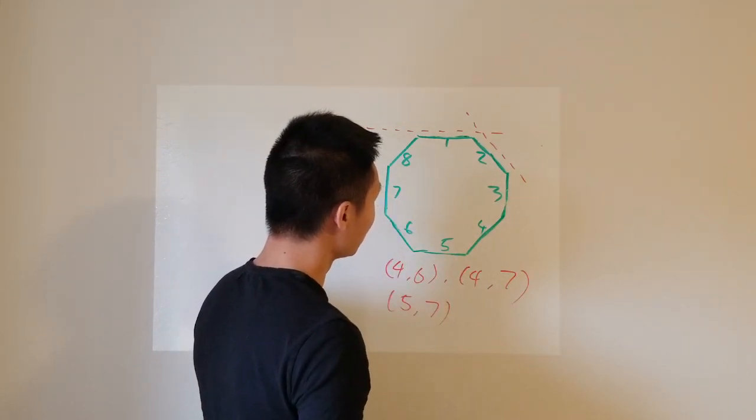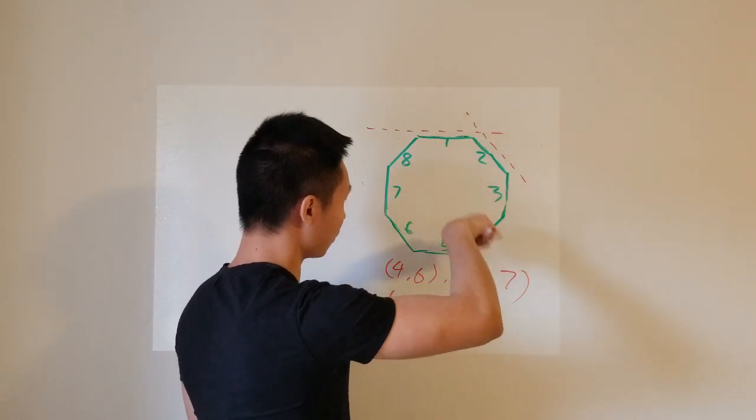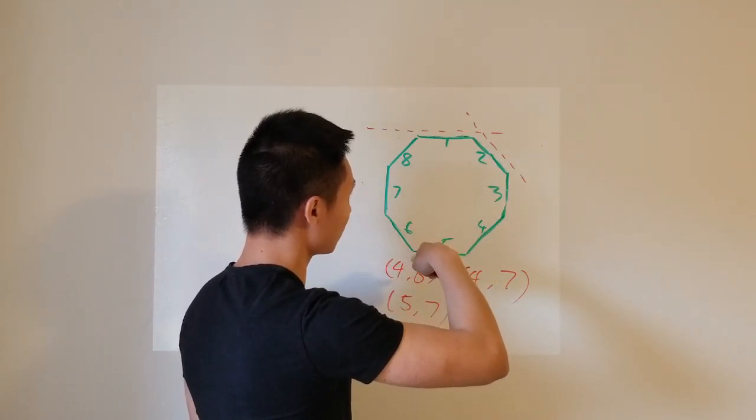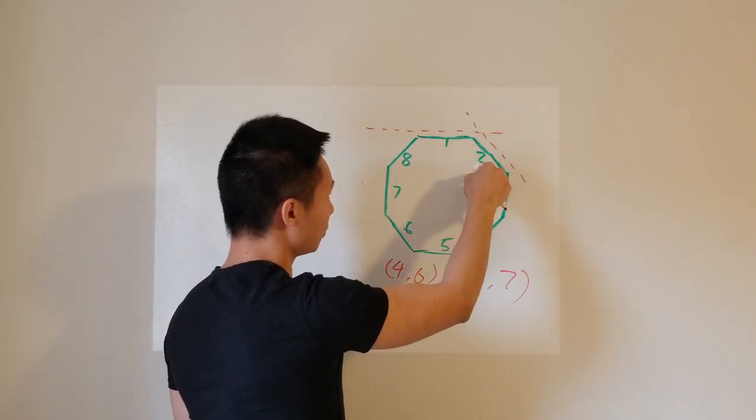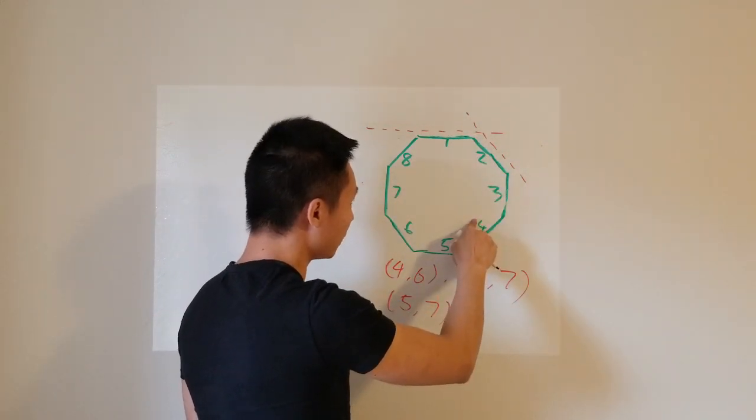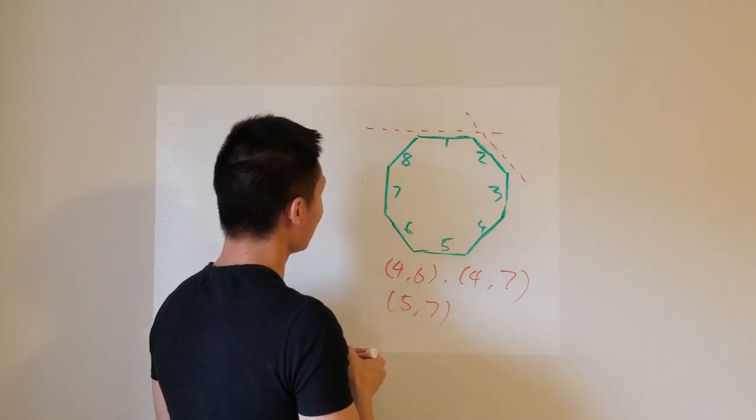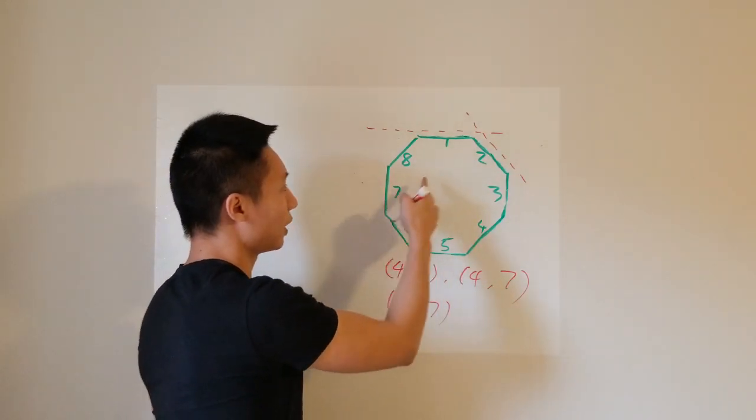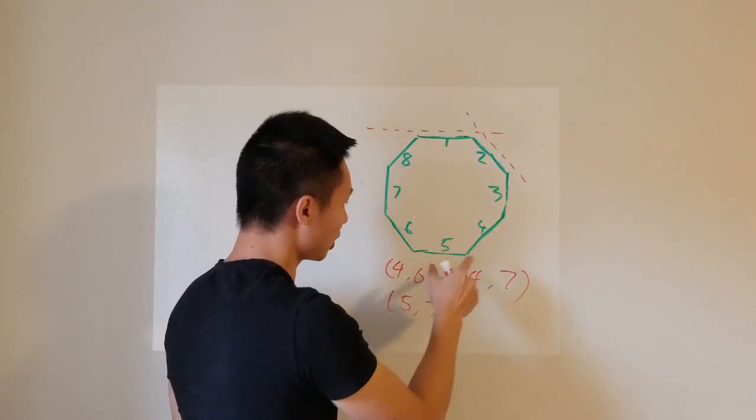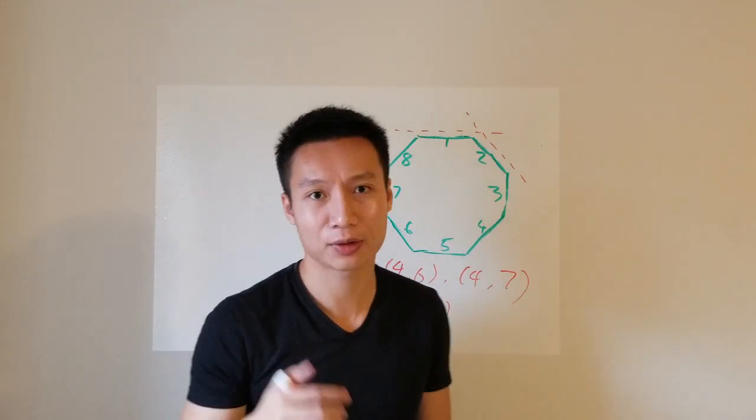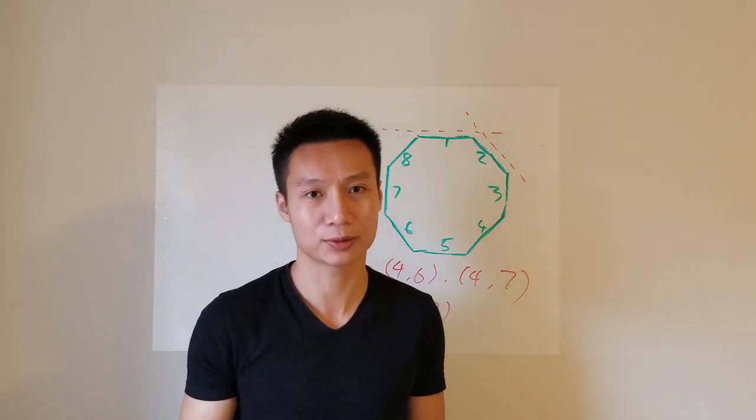So this sub-case, for every time I choose the 2, I have 3 choices for the rest 2. So how many first 2's can I choose? I can choose 1, 2, 2, 3, 3, 4, rotate this around the clock. I have 8 of them, 8 choices to fix the 2. Now once I fix the 2, each has 3 choices. So therefore, I have 3 times 8, 24 choices in total.